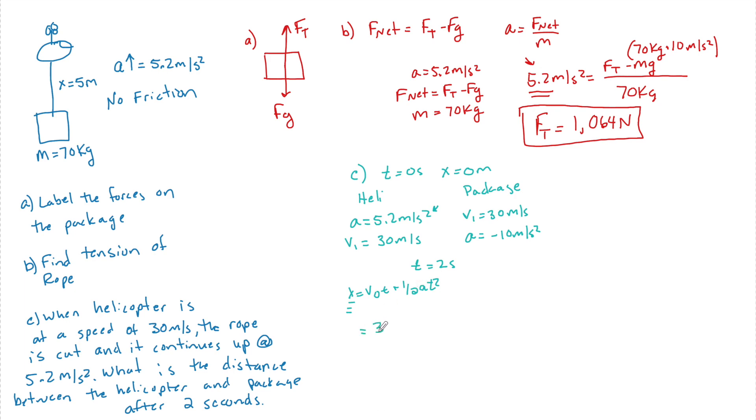And it's going to be equal to 30 times 2 plus 1 half times 5.2 times 2 squared. I don't need to plug in units here because I've already established I know a variable, a magnitude, and its units.